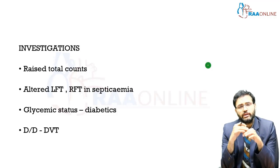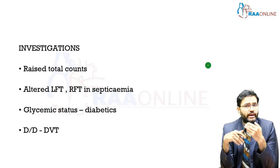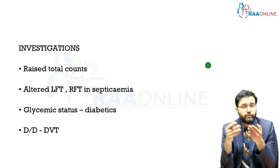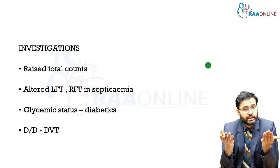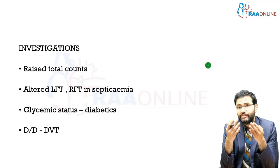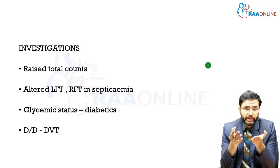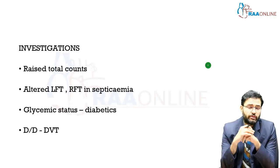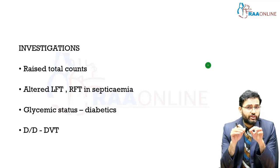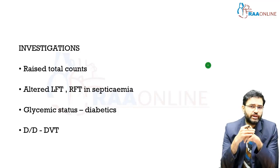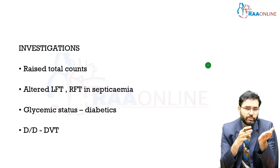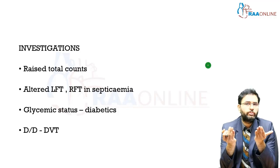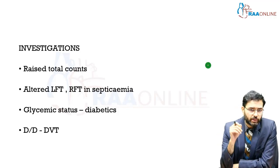Investigations include a routine blood count to look for raised total counts with polymorphonuclear cell predominance. If septicemia is present, there may be altered liver and renal function tests. If the patient is diabetic, glycemic status must be assessed. A common differential diagnosis of cellulitis involving the leg and calf region is deep vein thrombosis, and a venous Doppler may be needed to differentiate between the two.